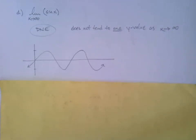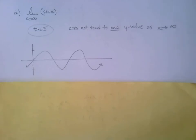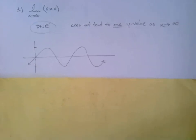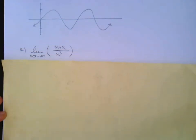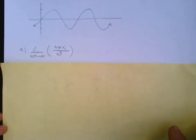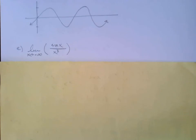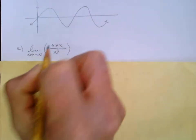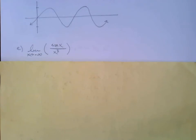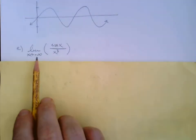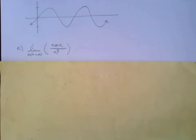Now let's do a variation: the limit as x approaches negative infinity of sine of x divided by x to the third. We know sine stays between negative one and one — but does that mean the whole thing is DNE? Can we ignore the rest of it? No.